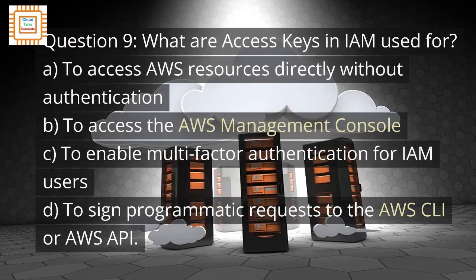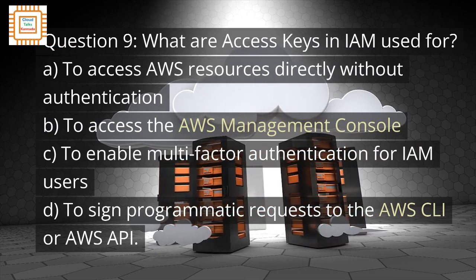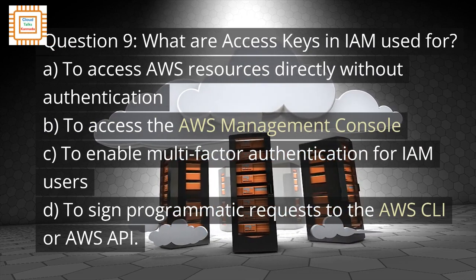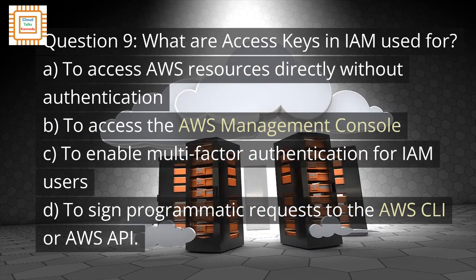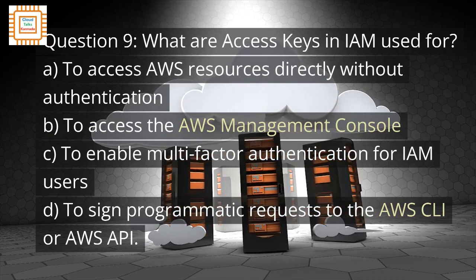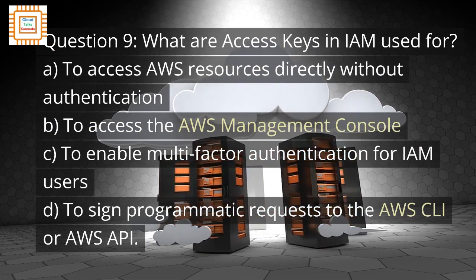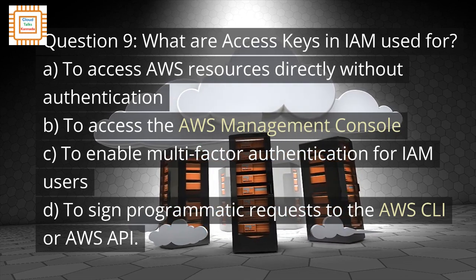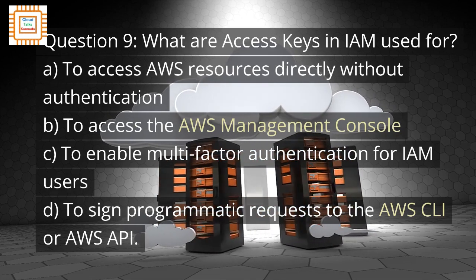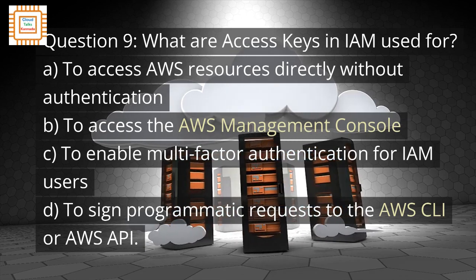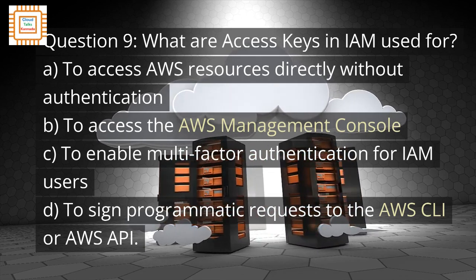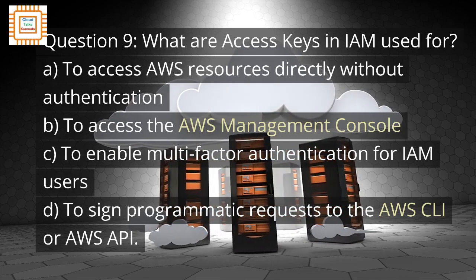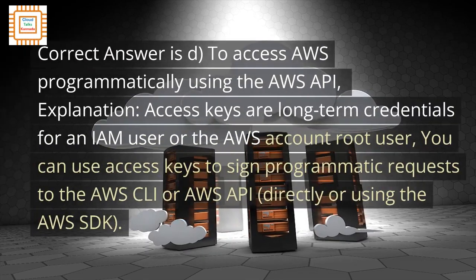Question 9: What are access keys in IAM used for? A. To access AWS resources directly without authentication. B. To access the AWS Management Console. C. To enable multi-factor authentication for IAM users. D. To sign programmatic requests to the AWS CLI or AWS API.